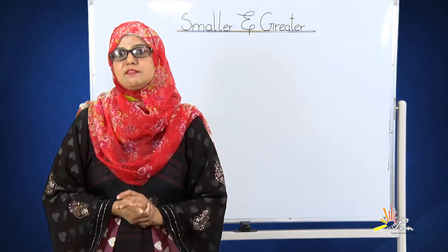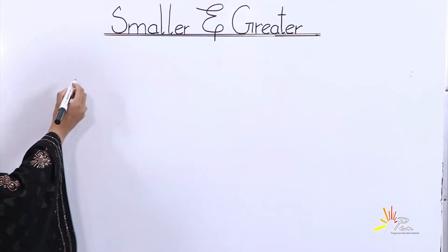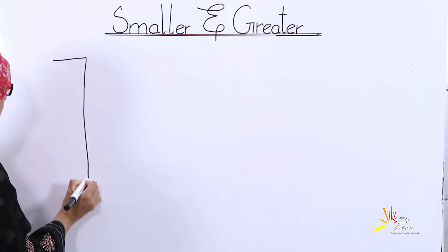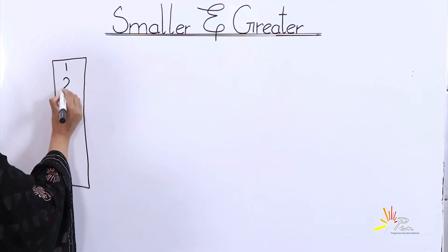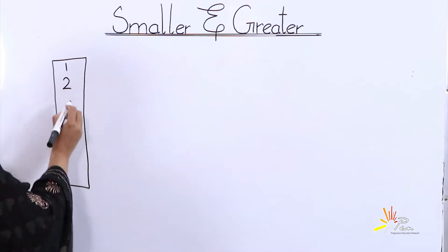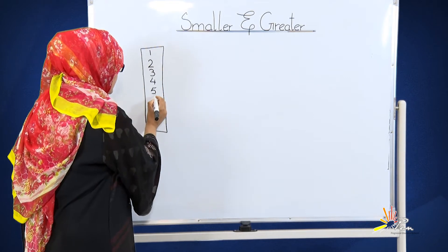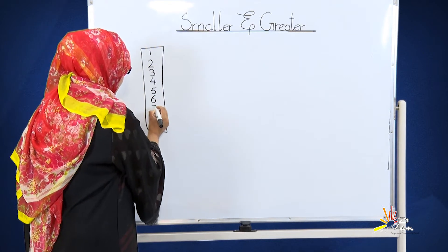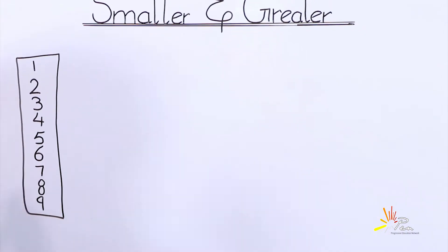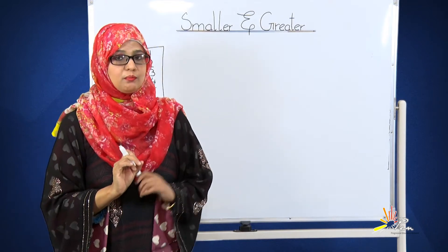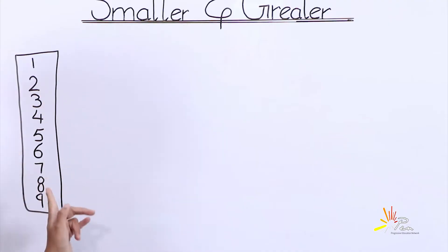Don't be confused. I have a very simple technique just for you. First of all, I will draw a table of counting from one to nine: one, two, three, four, five, six, seven, eight and nine. You all should know this counting. First of all, draw this table counting from one to nine.